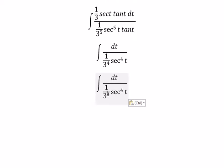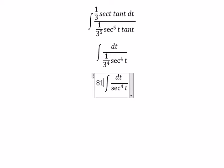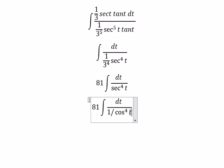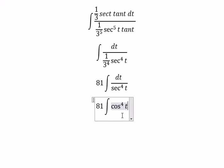This one we can put about 3 to the power of 4 in here — 3 to the power of 4. You got about 81, cos of t to the power of 4.